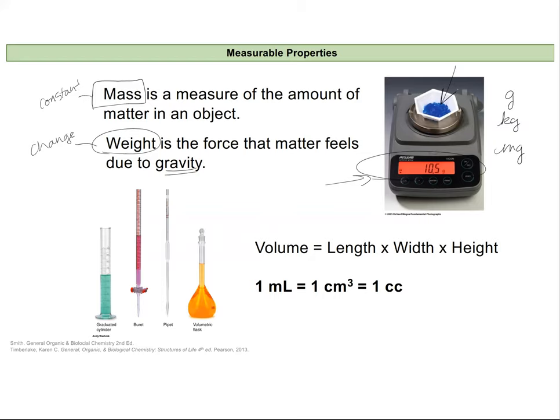Volume, if you remember back to your math class, is typically represented as the length times the width times the height of an object. So if we took a 1 centimeter cube, it would be 1 centimeter times 1 centimeter times 1 centimeter, which would give us 1 centimeter cubed. So, centimeter cubed would be the units for volume.